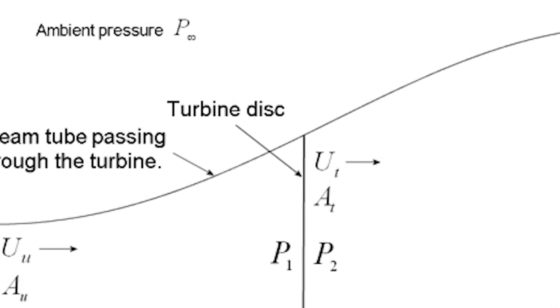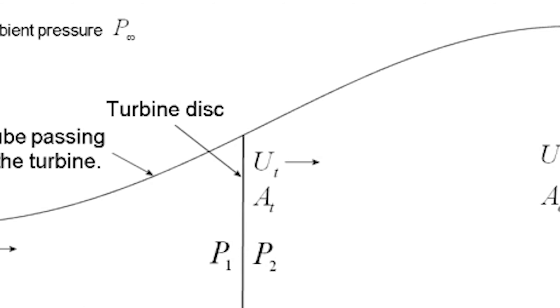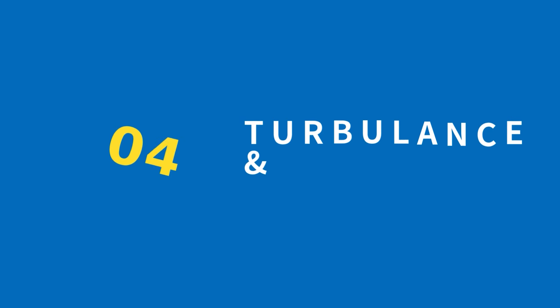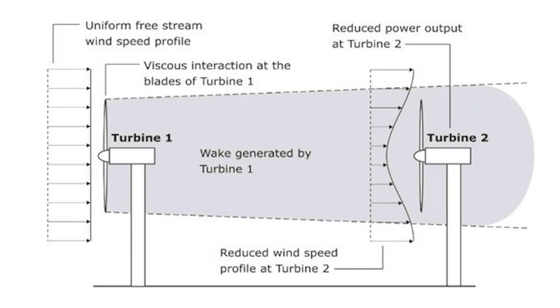Another crucial factor is the Betz limit, named after the German physicist Albert Betz. It establishes the maximum amount of energy a wind turbine can extract from the wind. According to the Betz limit, the maximum energy a wind turbine can extract from the air is 59.3%. Even though this number may seem low, it plays an important role in understanding and collecting wind energy.